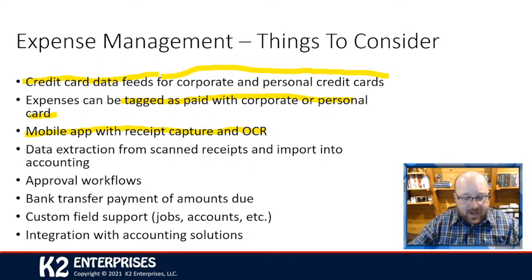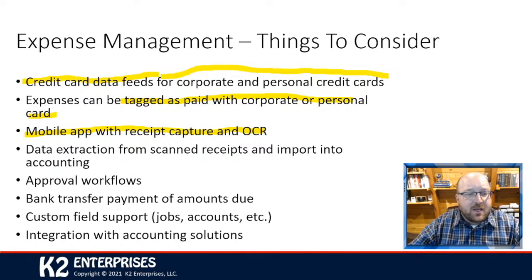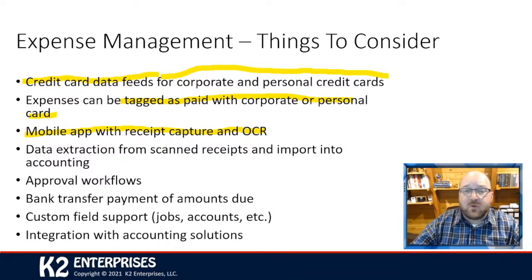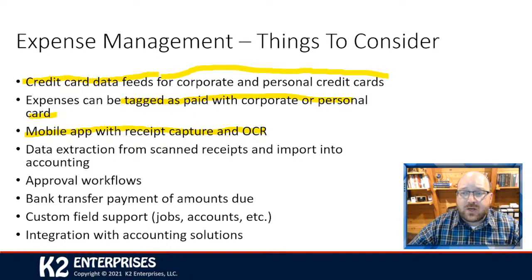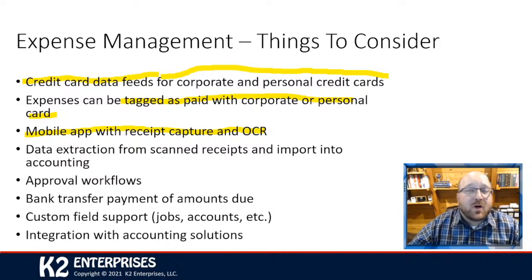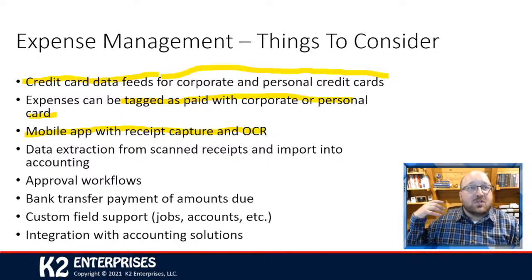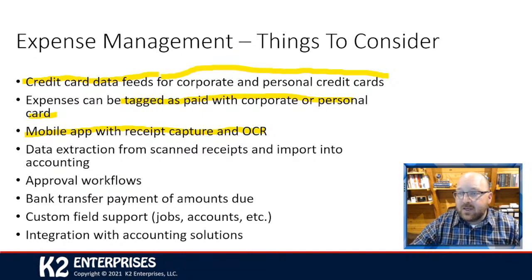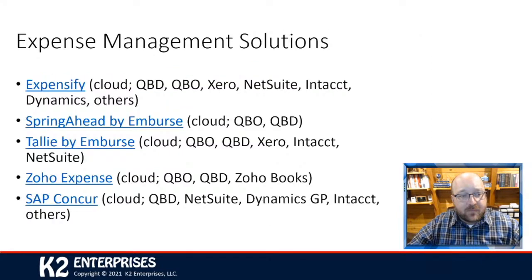Employees can then classify transactions — travel, meals, supplies — tag them as personal or corporate, and tag them to a particular project. Most solutions have a mobile app where you can snap a picture of the receipt with all the exact details required for proper tracking. They can also have an approval workflow — the expense goes to a manager, then maybe a CFO for large invoices — similar to the AP approval workflow in Bill.com. You can also set up automatic reimbursements to employees.